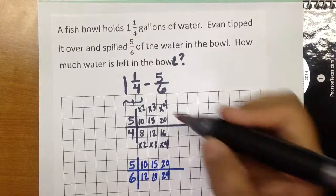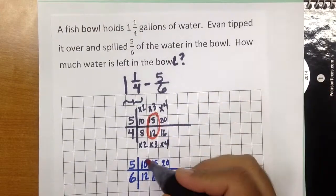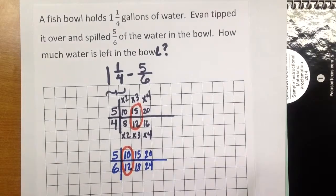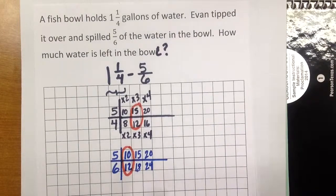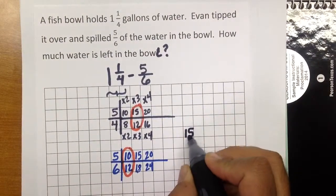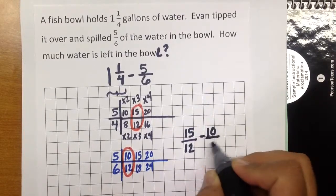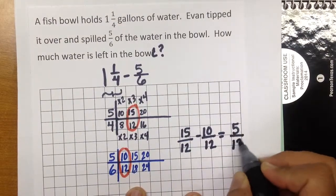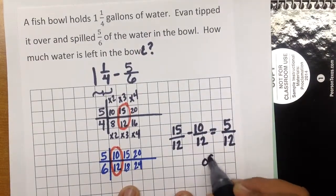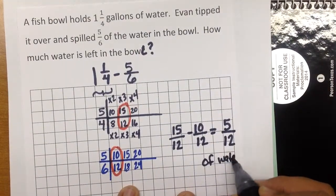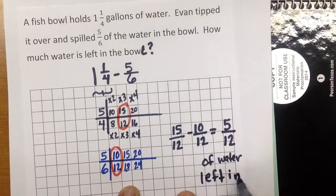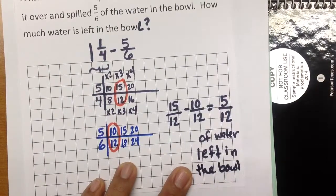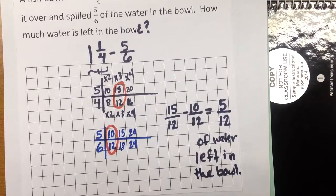The least common denominator in this case is twelve. It's a subtraction problem, so we take our two new fractions — fifteen over twelve and ten over twelve — and subtract them. Fifteen minus ten is five, which means we have five-twelfths of the water left in the bowl. So that was adding and subtracting fractions with unlike denominators using a ratio table on the graph paper. Thank you.